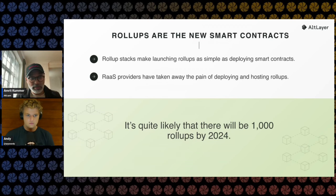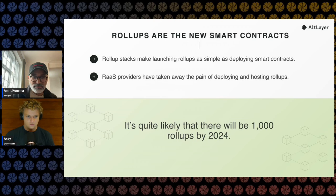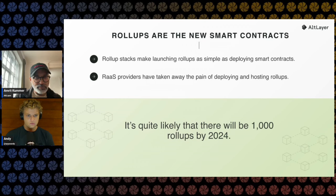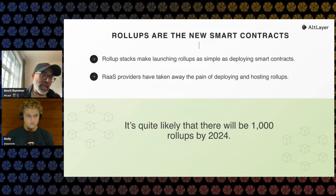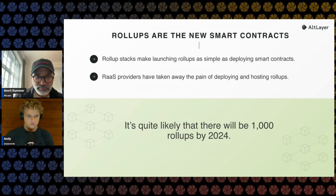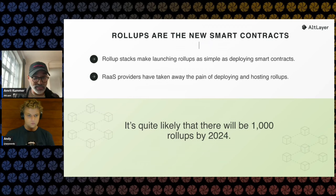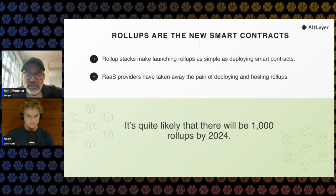What has happened is it has become as simple as deploying a bunch of contracts to have your own chain up and running — very different from a Cosmos-style or Polkadot-style chain where you need to find hundreds of validators. Rollups are much easier to spin up, and with the advent of OPStack and RaaS providers, it has become 10x or 100x easier to launch a rollup. We're seeing a bunch of rollups being launched every single day. We ourselves have onboarded at least 40 clients across Testnet and Mainnet, and it's quite likely there'll be at least 1,000 rollups by end of 2024.